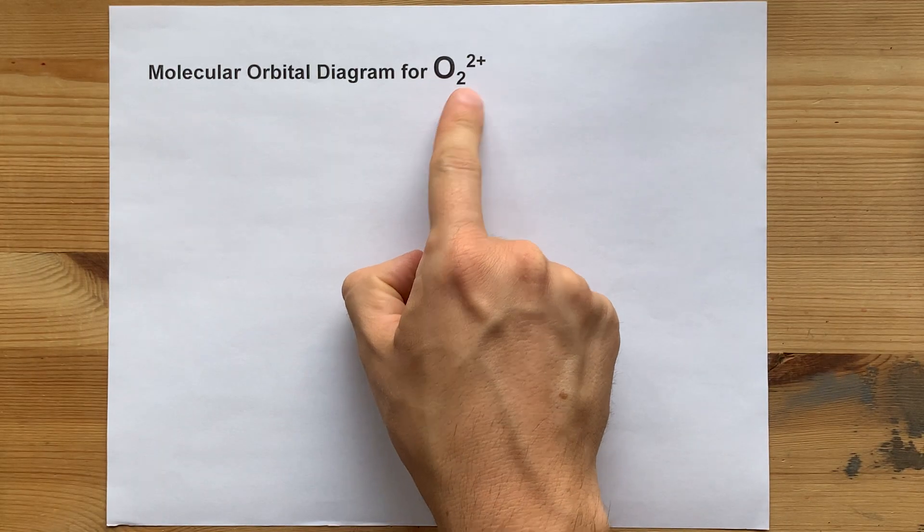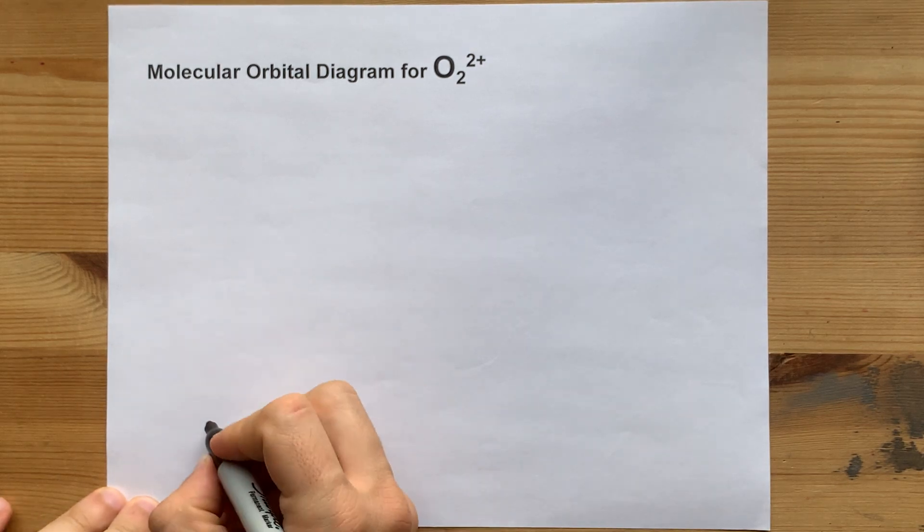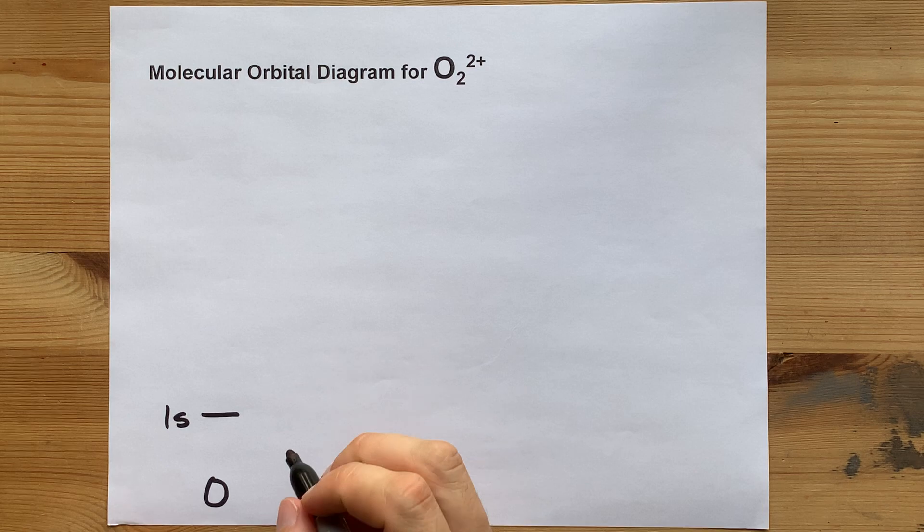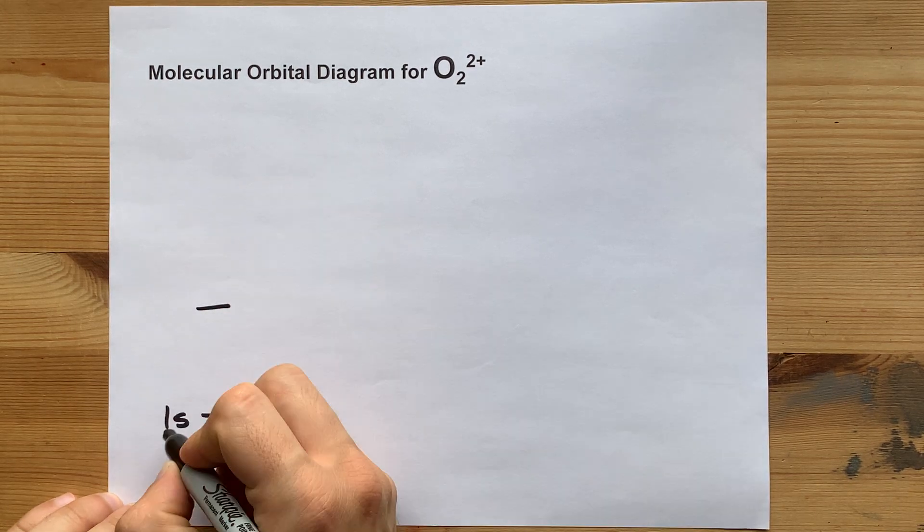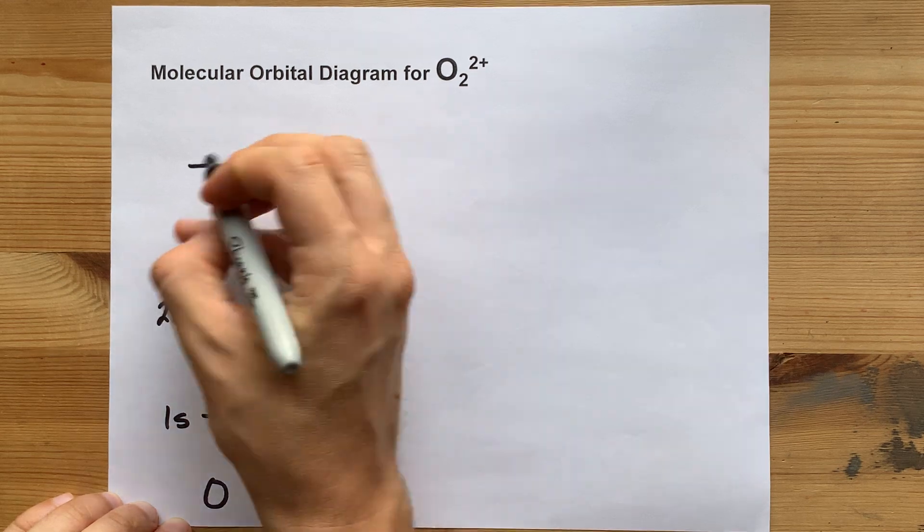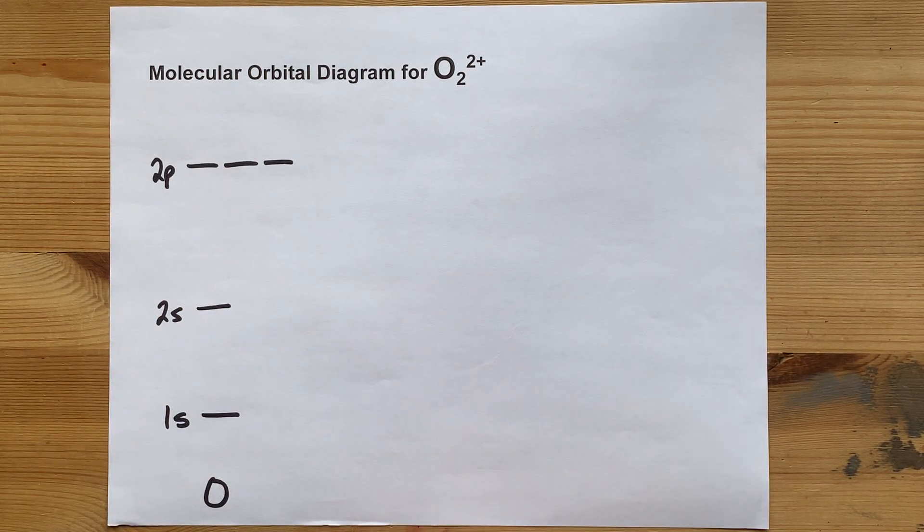Molecular orbital diagram for O2 with a plus two charge. Let's start with the atomic orbitals for oxygen atoms on their own. You have a 1s shell, well, subshell. You have a 2s subshell, and then you have three 2p orbitals in the 2p subshell.